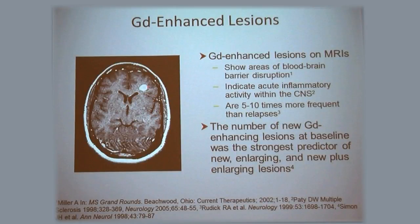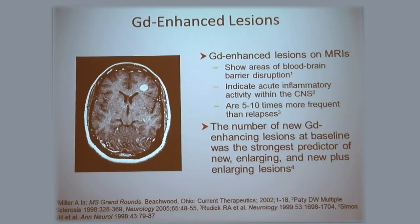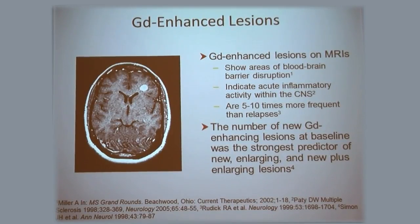This is an example of a gadolinium-enhancing lesion. This is a T1-weighted sequence — you can see water is black here. This is where the gadolinium has leaked out into the brain. In that area of inflammation, the veins became leaky, and when they injected the gadolinium it leaked out into that area. You can see it didn't leak out into any of the other areas — only in this area — and that's why it lit up, changing the MRI signal.